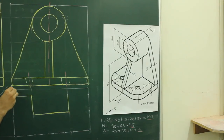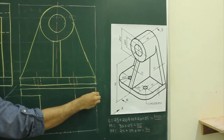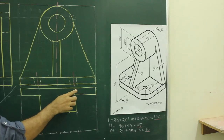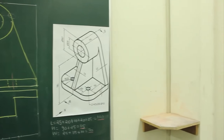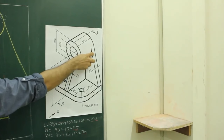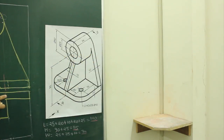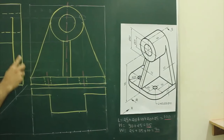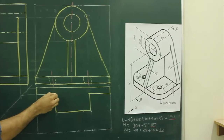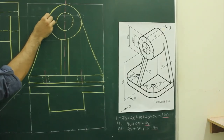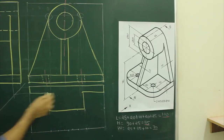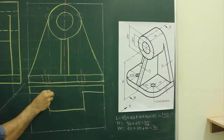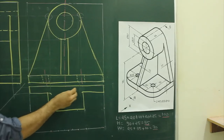Over here there will not be any dark line — because if you see the main diagram, there is no edge, so we will not be drawing an edge in the top view or in the side. To get this approximate length, we need to project from the front view. We will get the length of the rib and draw a curve — extend till there and draw the curve. This is called a merging curve.